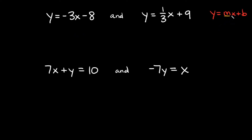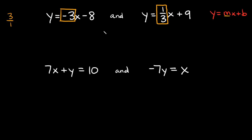The slopes are the numbers next to the x. In the first equation the slope is negative 3, and in the second equation it's positive one-third. For these to be perpendicular the slopes have to be reciprocals — and they are: 3 written as a fraction is 3 over 1, and its reciprocal is 1 over 3, which is what we have. They also have opposite signs — one negative, one positive — so these two equations are perpendicular.